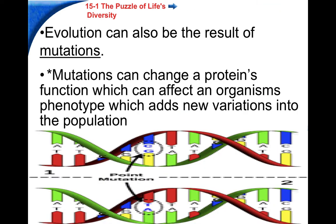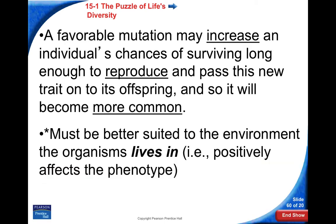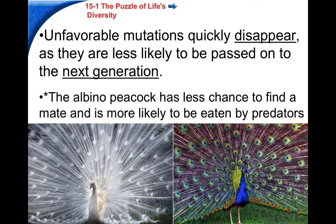Evolution is driven by mutations — a change in the genetic material which changes the amino acids in a protein and can add different characteristics to an organism. Most mutations are harmless, but some can be harmful and some can be helpful. A favorable mutation can increase the organism's chance of survival and allow them to pass on that gene to the next generation. Unfavorable mutations tend to disappear quickly because those organisms are less fit — like the albino peacock, which sticks out and is easily identified and eaten by predators.